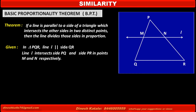Also, line L intersects side PQ and side PR at points M and N respectively, such that P–M–Q, meaning P, M, and Q are collinear and M is between P and Q. Also, P–N–R, meaning P, N, and R are collinear and N is between P and R.